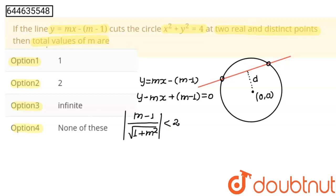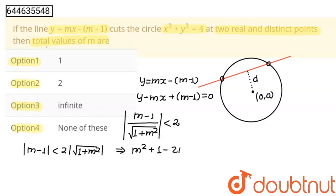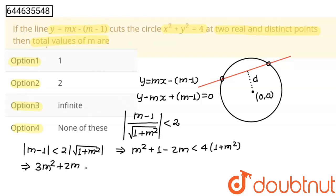Now I am going to cross multiply. We get |m - 1| < 2 × √(1 + m²). Squaring both sides gives m² + 1 - 2m < 4(1 + m²). Multiplying out and rearranging: 3m² + 2m - 3 > 0.